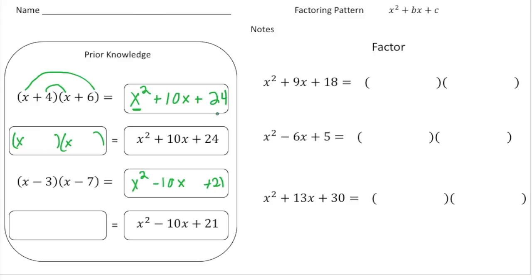Now to get the 24 — if we did FOIL, it would be the product of the last terms. So 4 times 6 gives us 24, so I'm going to put a 4 here and a 6 here. To get the 10x, we added the product of the inside and the product of the outside. Because we're adding, we put a plus sign here and a plus sign here. So x plus 4 times x plus 6 gives us x squared plus 10x plus 24.